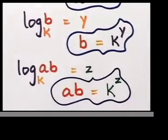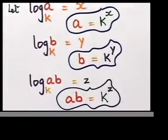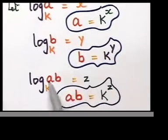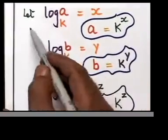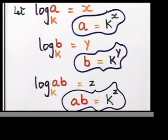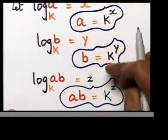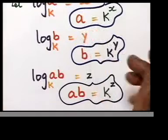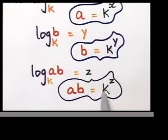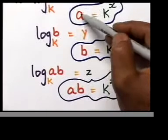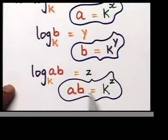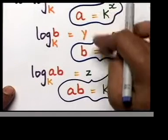Those are the three equations. The first one we called x, the second y, and log ab to the base k is z. We assumed these values because we don't know the actual values of a, b, and k. Our job is to work with these exponents: a equals k to the power x, b equals k to the power y, ab equals k to the power z. Let's take equation three and substitute the values of a and b.